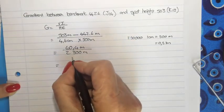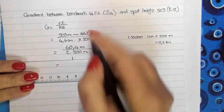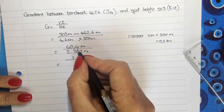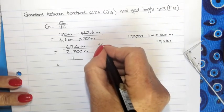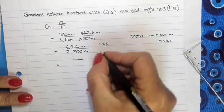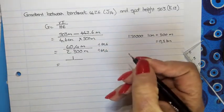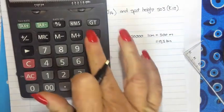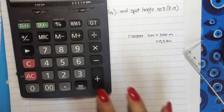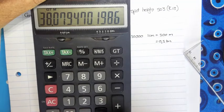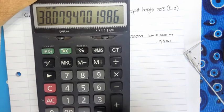Now, gradient we always indicate as 1 over something. Now, how do I get 60.4 to become 1? I divide by 60.4. What I do at the top, I do at the bottom. So, 2,300 divided by 60.4 gives me 38.1.